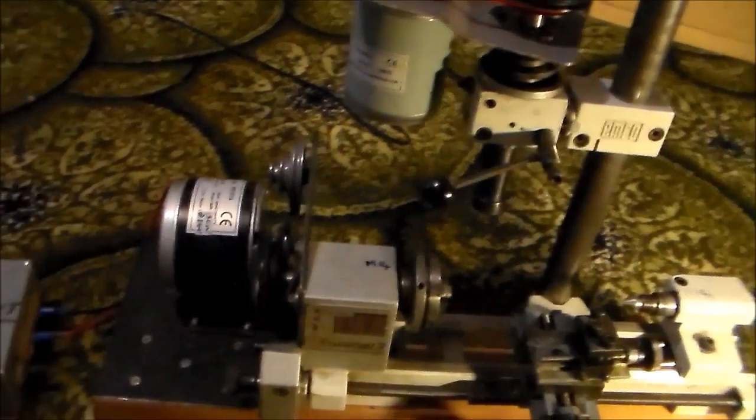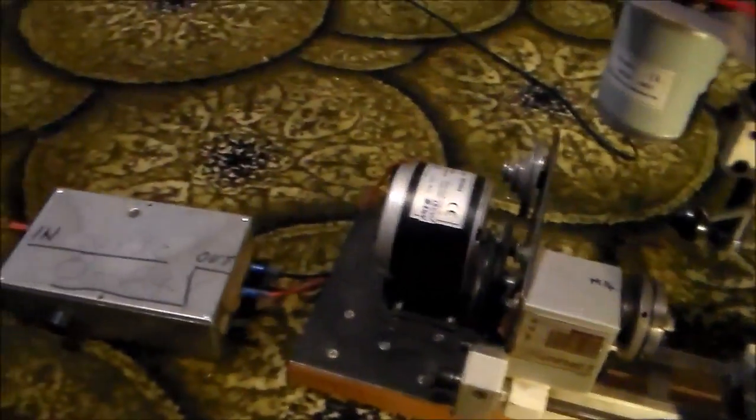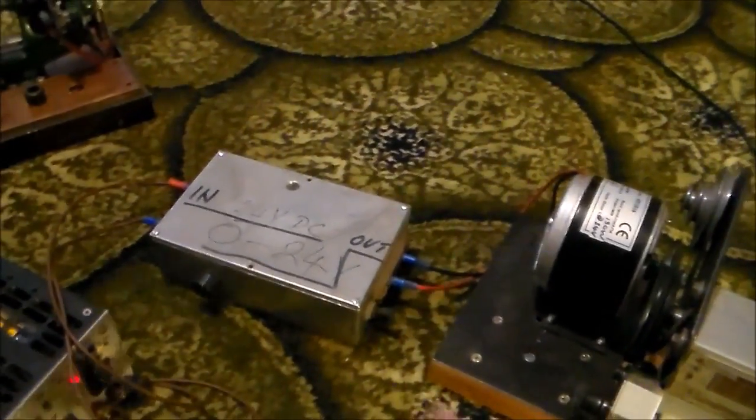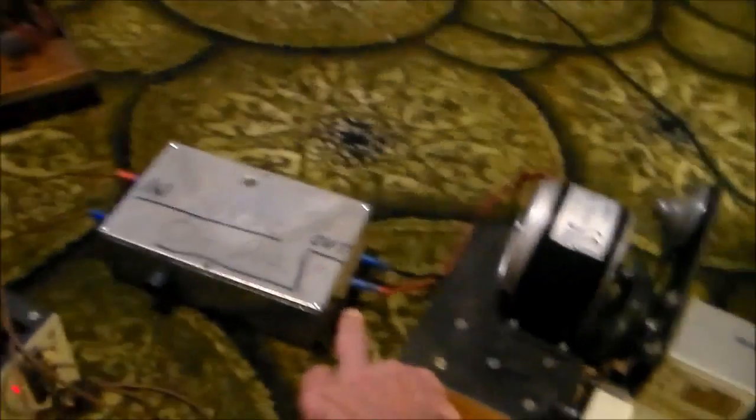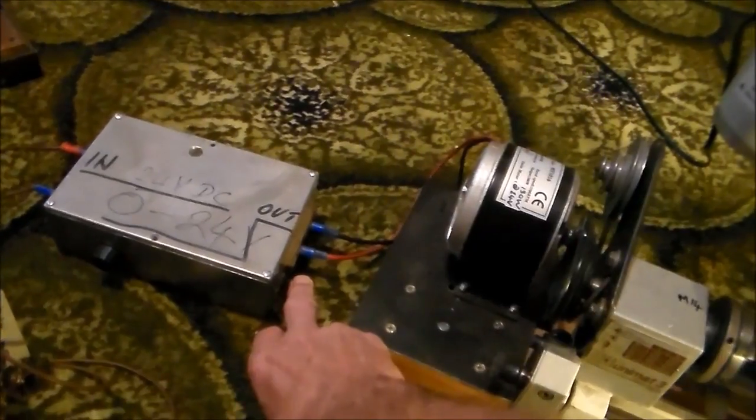So what have we got in terms of variable speed motors? Well, let me just show you. There's the box, which is the controller. There's a 24-volt power supply. That takes 24 volts DC in and gives 0 to 24 volts out.